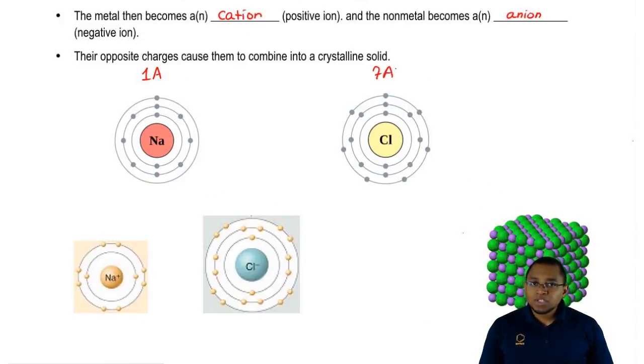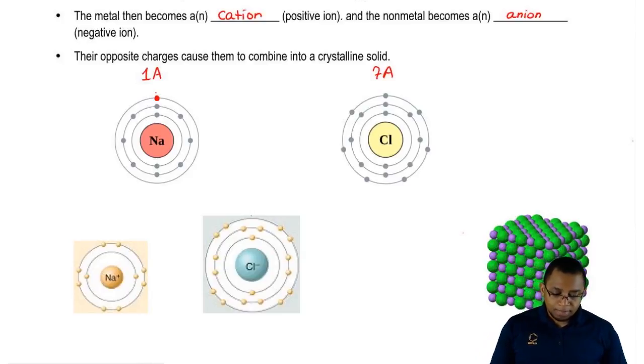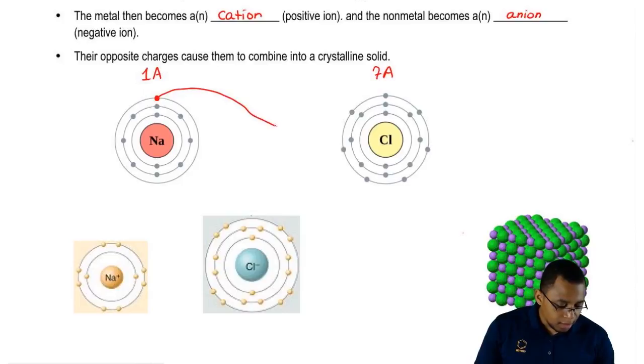Group 1A elements want to be plus one and they do this by losing one electron. Group 7A elements want to be negative one. By becoming negative one, they pick up an electron and become just like the closest noble gas. So, what's going to happen here is we have this outside electron. It's in our third shell for sodium.